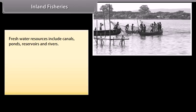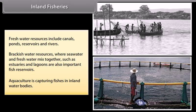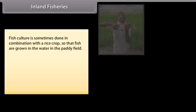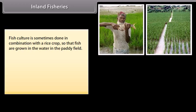Fresh water resources include canals, ponds, reservoirs and rivers. Brackish water resources, where sea water and fresh water mix together, such as estuaries and lagoons, are also important fish reservoirs. Aquaculture is the capturing of fish in inland water bodies. Fish culture is sometimes done in combination with the rice crop, so that fish are grown in the water in the paddy field.